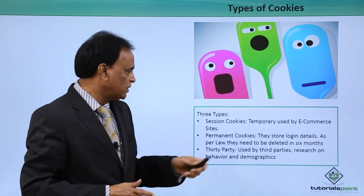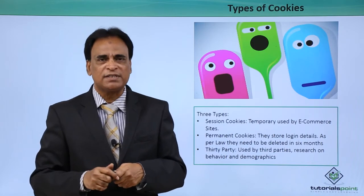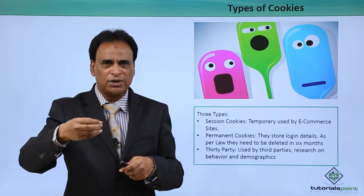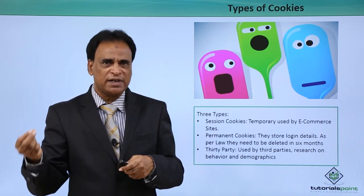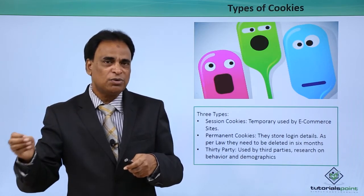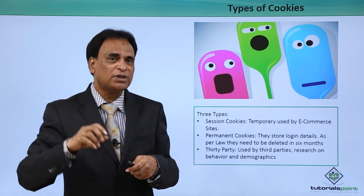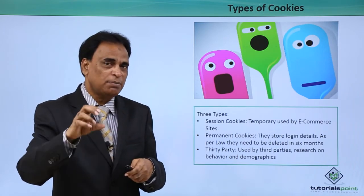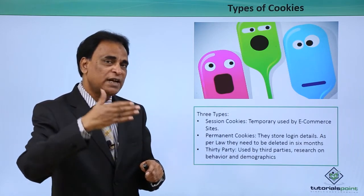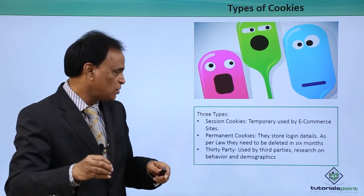There are three types of cookies. The first is session cookies — temporary files used by e-commerce sites. When you go to the home page, select a product, and add it to the shopping cart, that is a temporary cookie. When you go back to the same page, that product may still be in the cart. These temporary cookies are closed and not stored on your system when you close the browser.